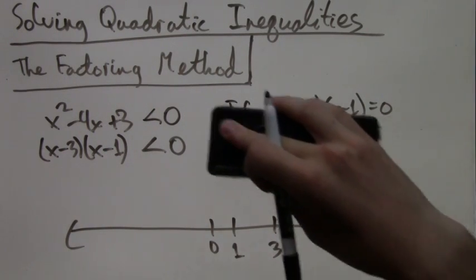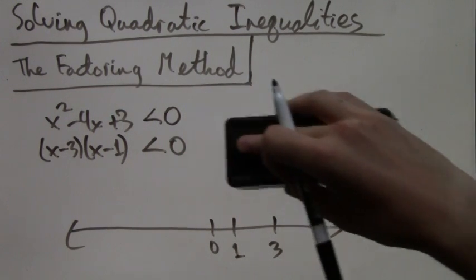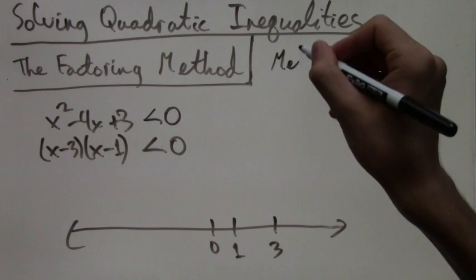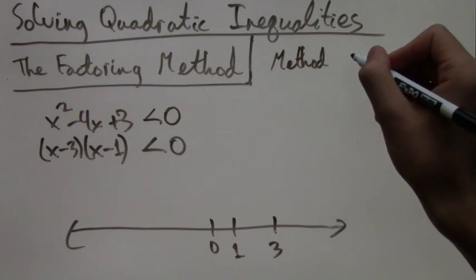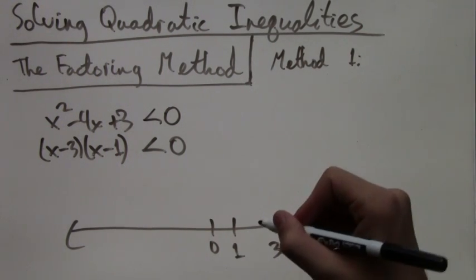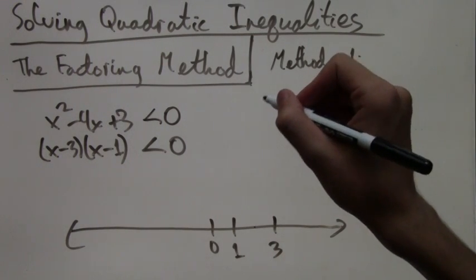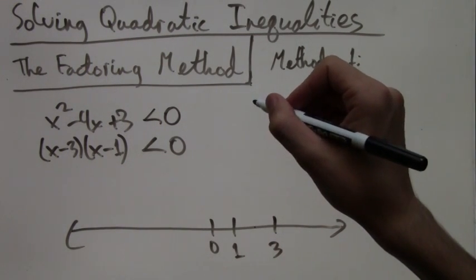So now we can move on to the end of the solution. After we have the roots, we have two different methods that we can use to solve this inequality. The first method is to test three points.